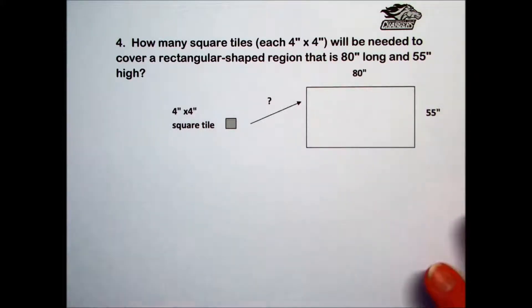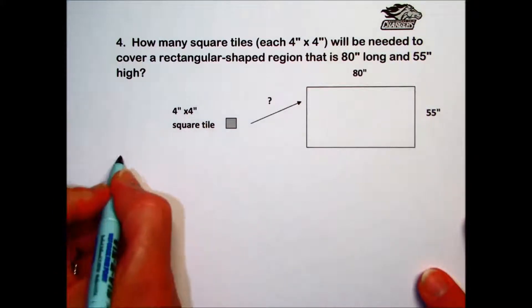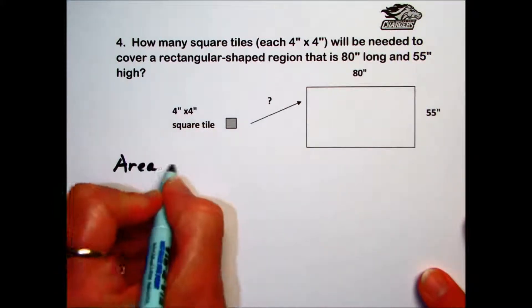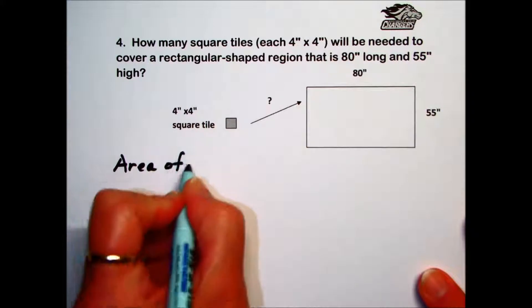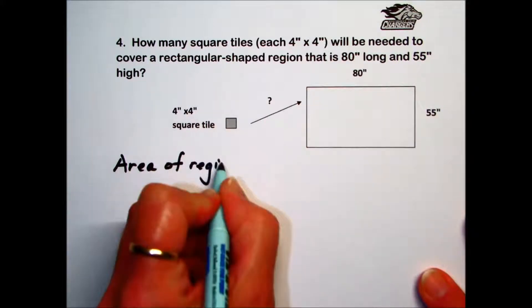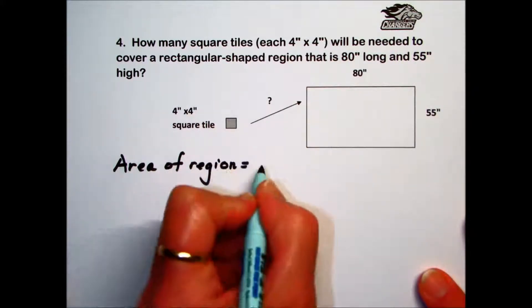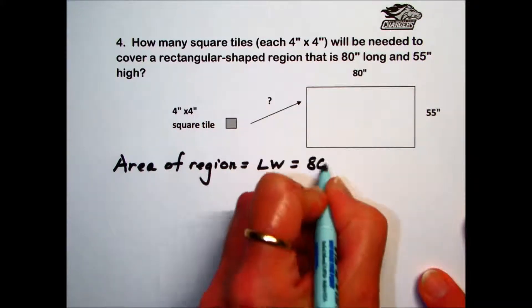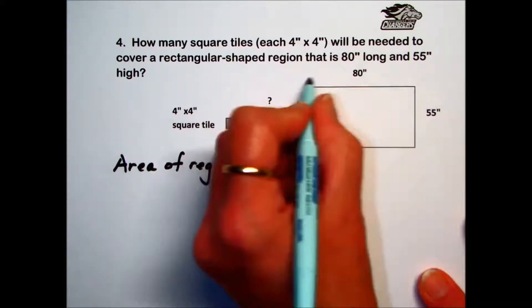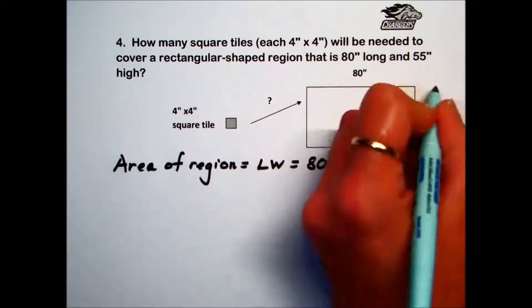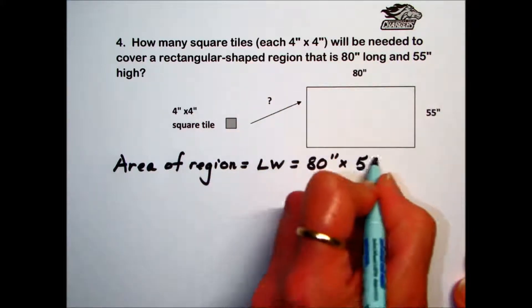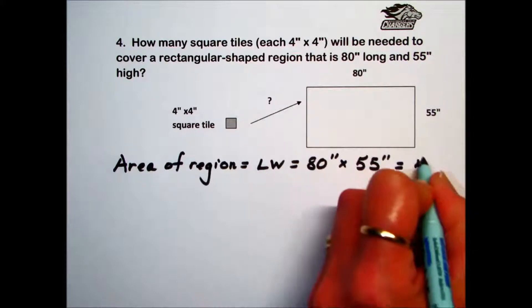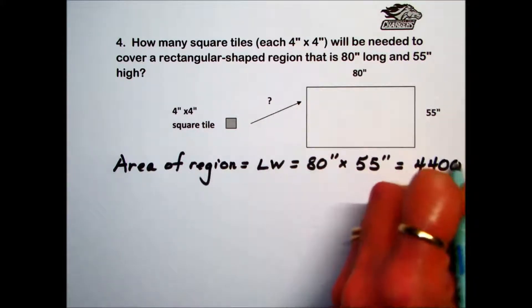Well, the first thing we'll want to do is find the area of the region. It's a rectangle. We'll use the formula length times width. We'll take our 80 inches long times our width of 55 inches, resulting in an area of 4,400 inches squared.